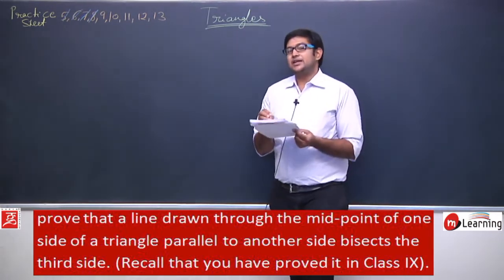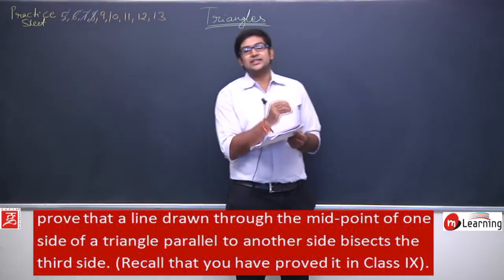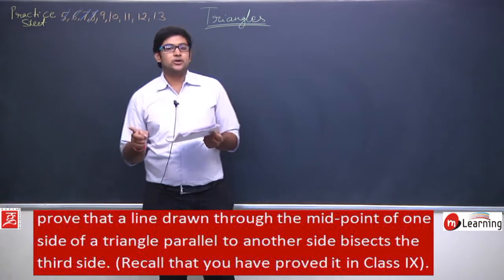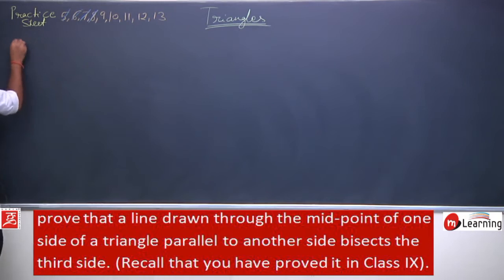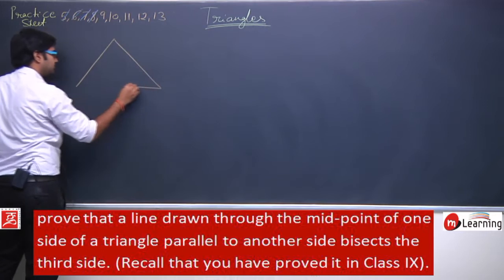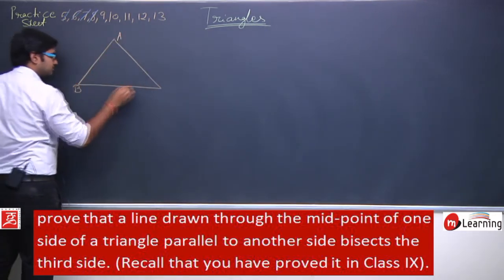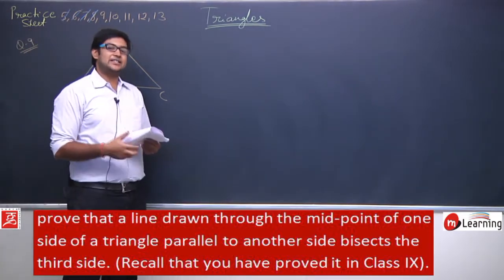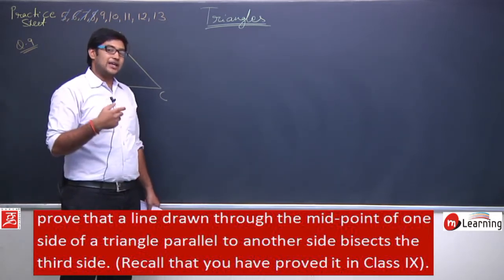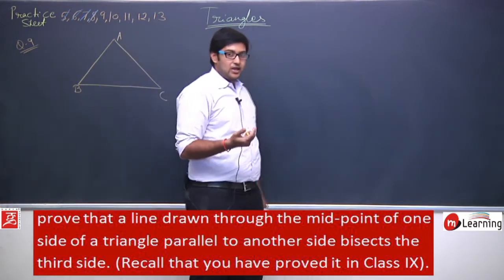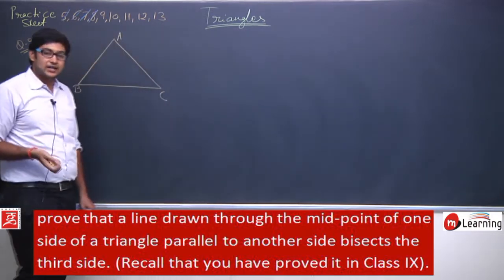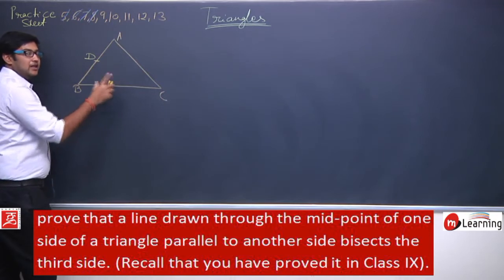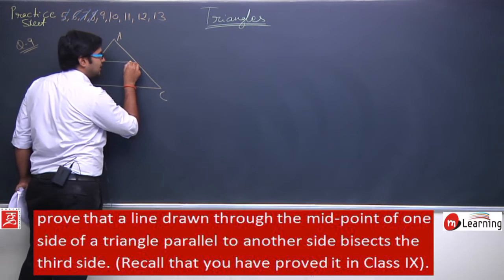This statement is from a theorem studied in class 9. Let us draw the diagram. This is triangle ABC. A line is drawn through the midpoint of one side, parallel to another side. Let D be the midpoint of AB. From point D, draw a line parallel to BC.